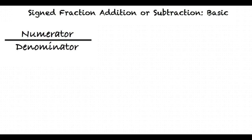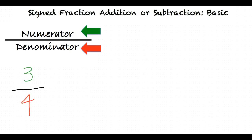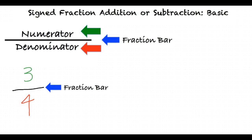What is the difference between a numerator and a denominator? Every fraction is made up of two parts: the numerator and the denominator. The numerator is the top part and the denominator is the bottom part. In this example, 3 fourths — 3 is the numerator because it is on top of the fraction bar, and 4 is the denominator because it is below the fraction bar.